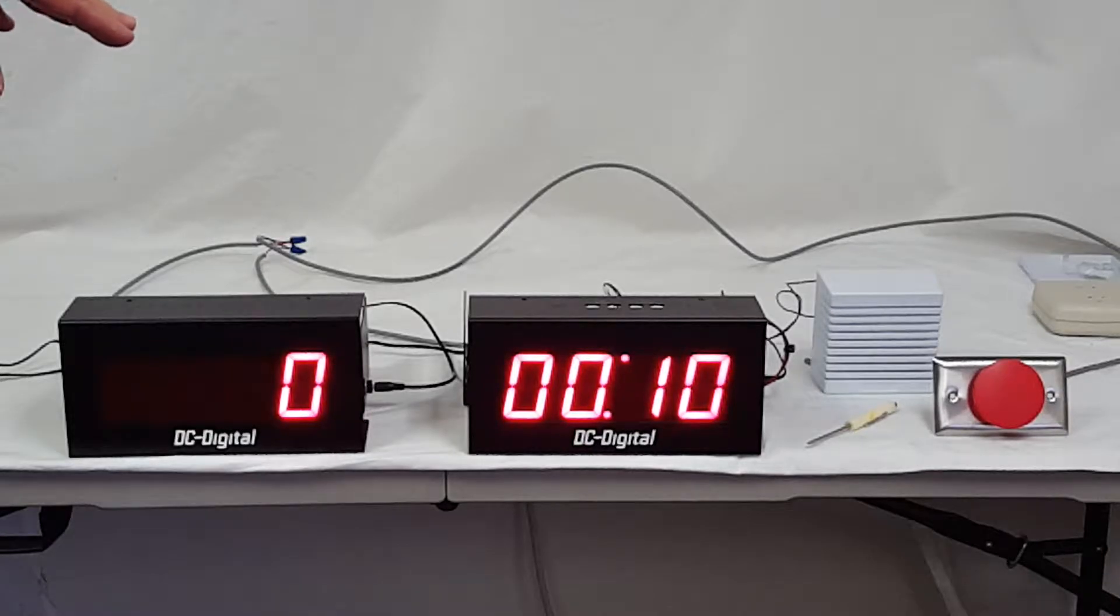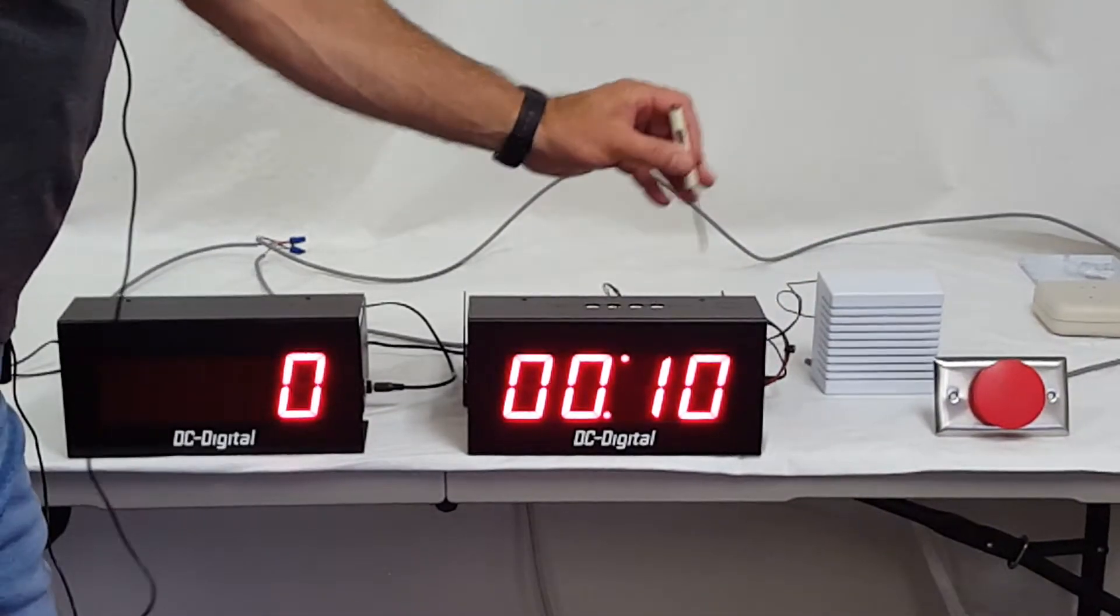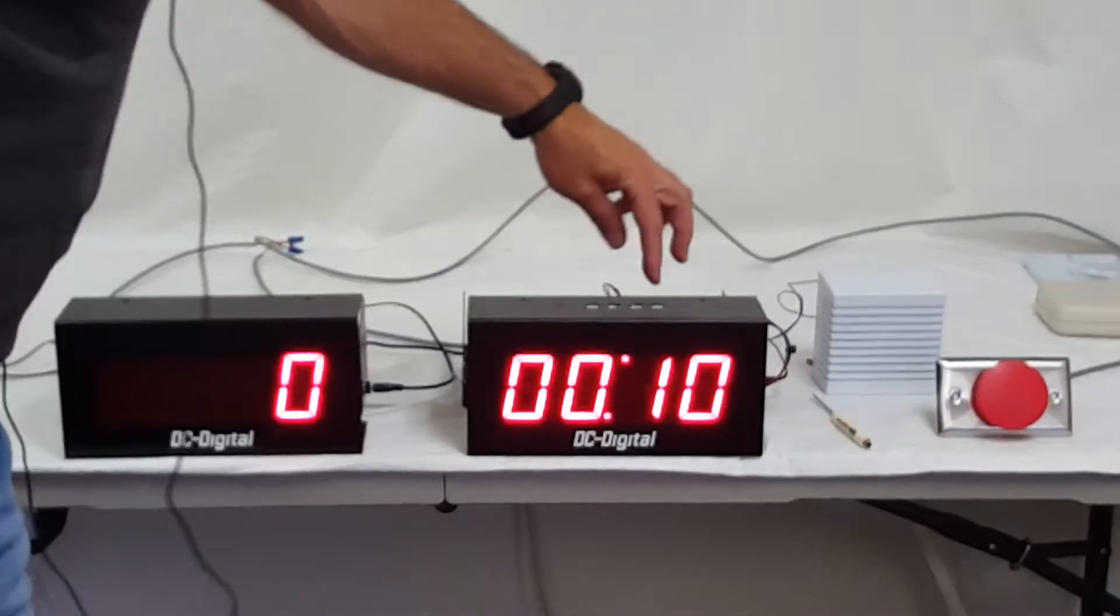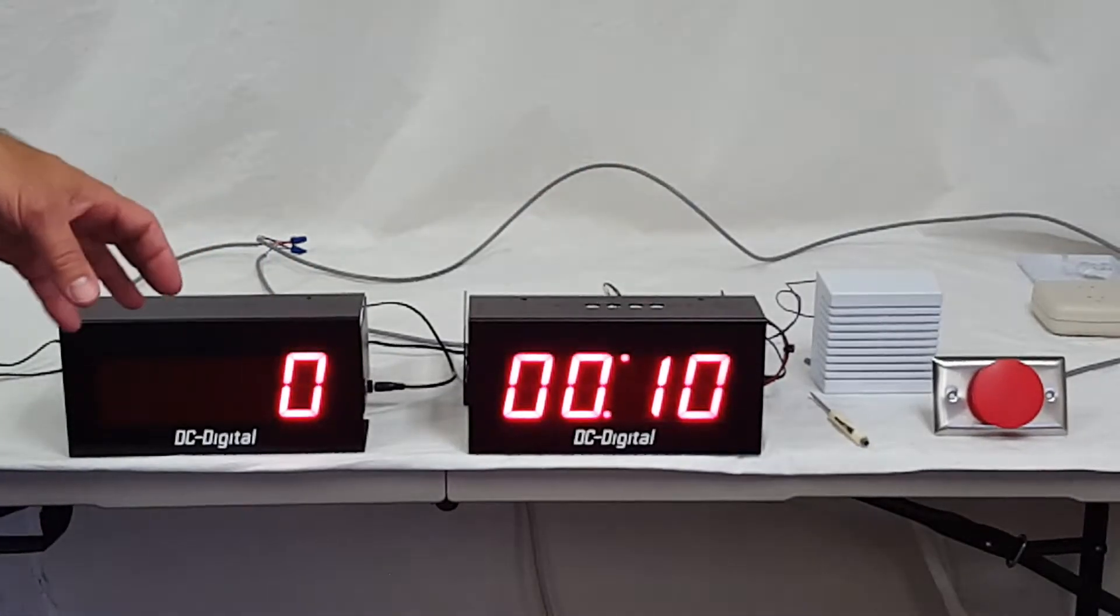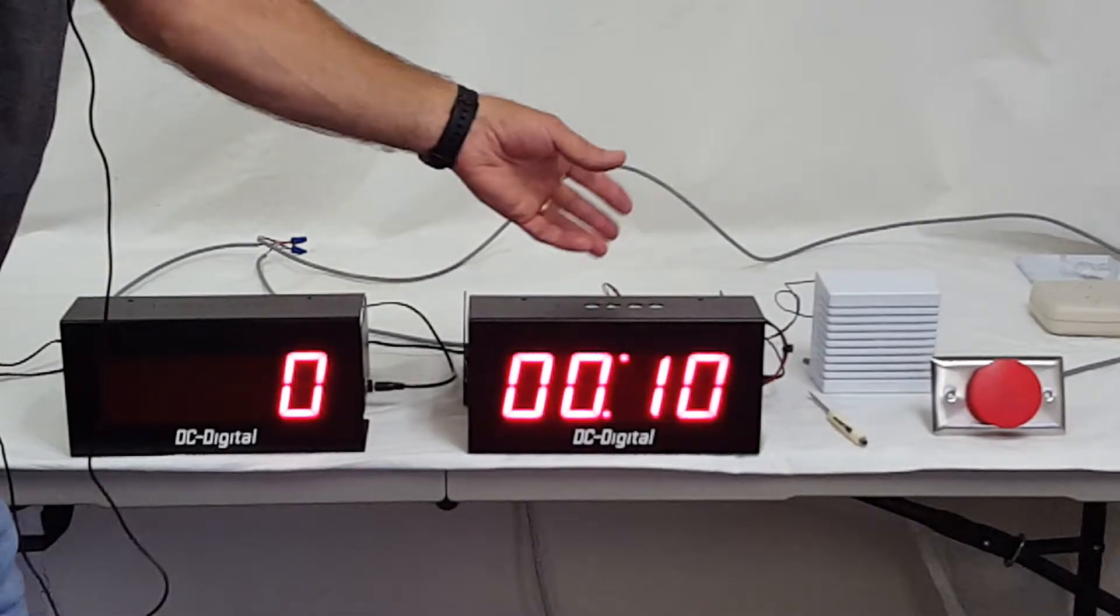The countdown timer is a BCD set, so you set it by turning the rotary switches to the value you want to reset to and start from. There are seconds and minutes here.